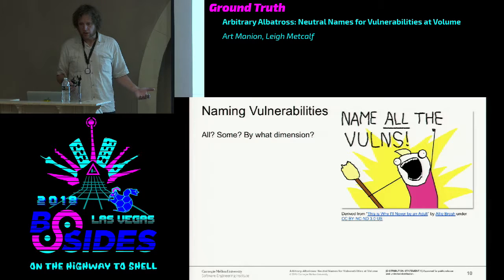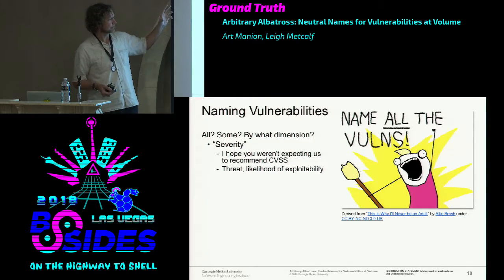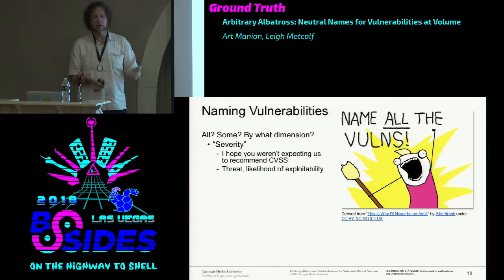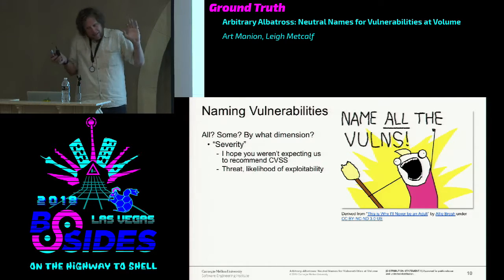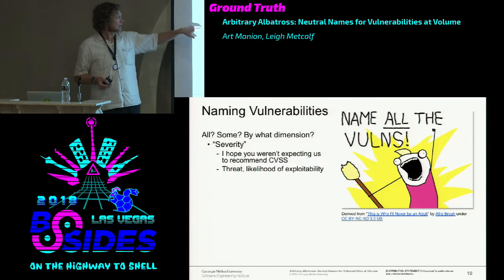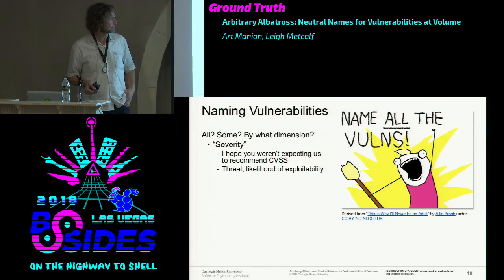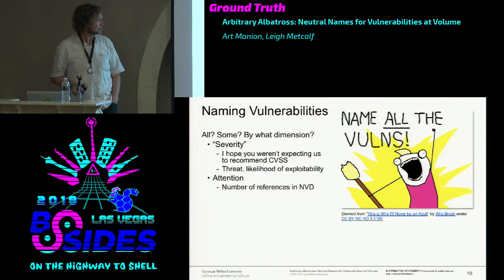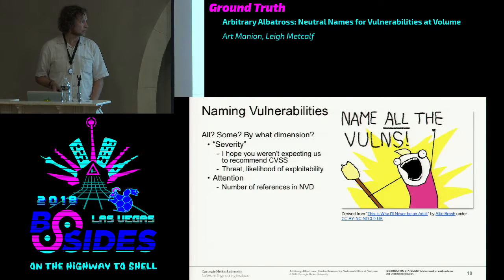What if we name all the vulnerabilities—or what if we name just some of them? How do we decide which ones rise to that level? I don't name a random thunderstorm; I name a tropical storm. Severity is a nice idea, though I have issues with CVSS. Maybe better would be existence in Metasploit—threat likelihood might be a better measure. Even attention: count the number of references in NVD or a CVE entry, and if it has more than 10, put a name on it.